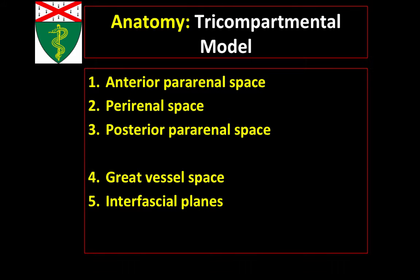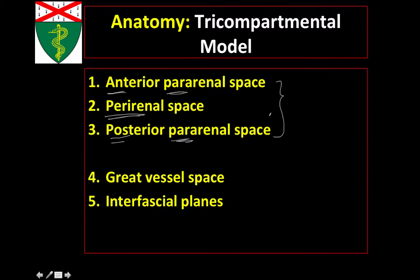The idea of the retroperitoneal anatomy is really centered around this tricompartmental model, which essentially discusses this anatomy with respect to the kidney, such that the space anterior to the kidney is known as the anterior pararenal space, the space posterior to the kidney is known as the posterior pararenal space, and the space around the kidney is known as the perirenal space. I'll also talk about something called a great vessel space, because there are certain pathological processes that like to occur in that space, so it's important to always evaluate it. And finally, we'll touch upon the interfascial planes, which brings everything together and allows us to discuss how these different spaces communicate with one another.